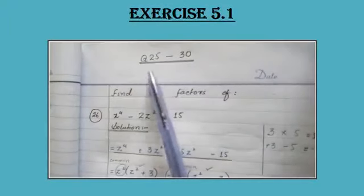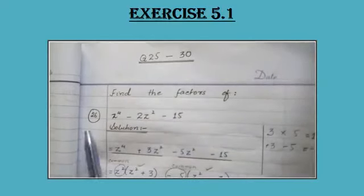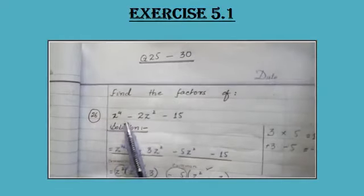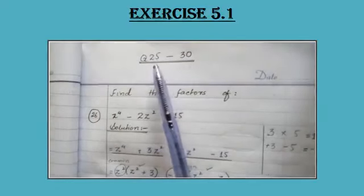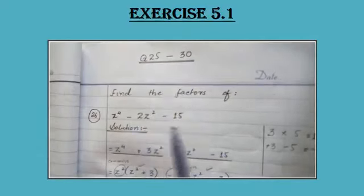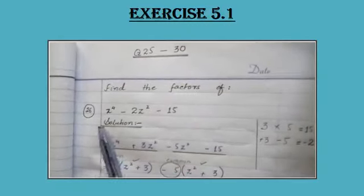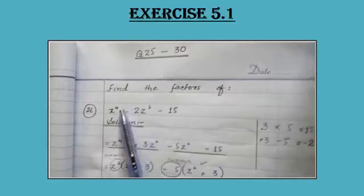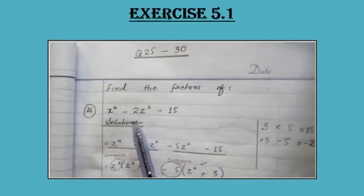Now we have questions number 25 to 30 — find the factors. We are going to solve question number 26 here: z raised to 4, minus 2z squared, minus 15. You have to solve questions 25 to 30 using the same pattern — middle term break. Middle term break means you have three terms given and you have to break it into two parts.